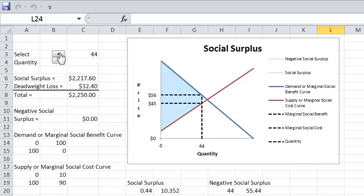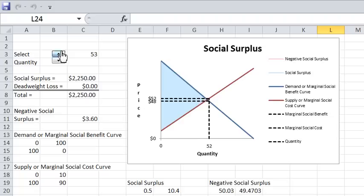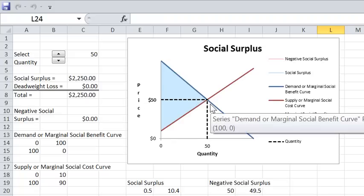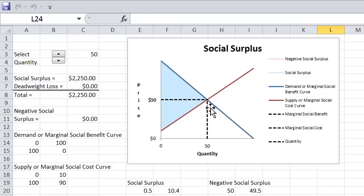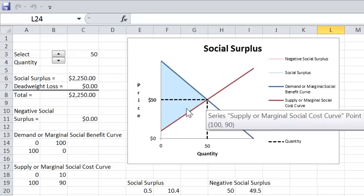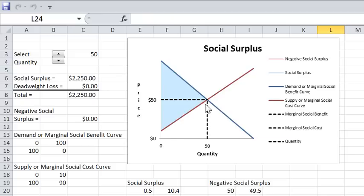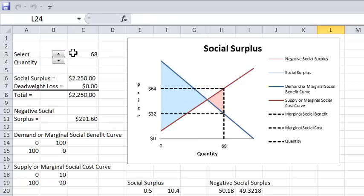Where is social surplus maximized? It's maximized where the marginal social benefit equals the marginal social cost, or where supply equals demand, right here. If you go further and continue to increase output, marginal social cost exceeds marginal social benefit and you start actually getting negative surplus. This is not good.